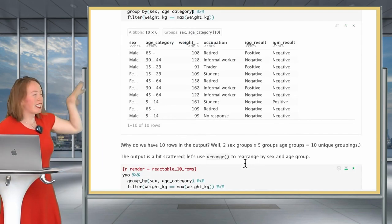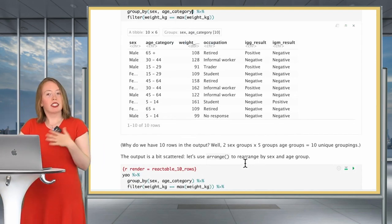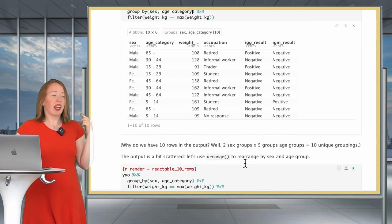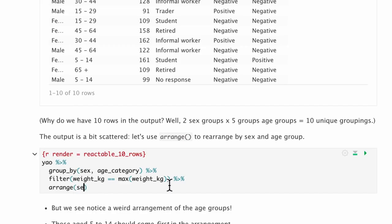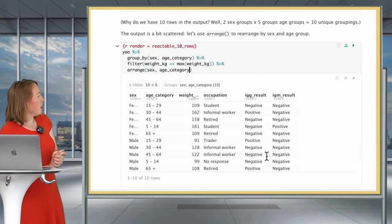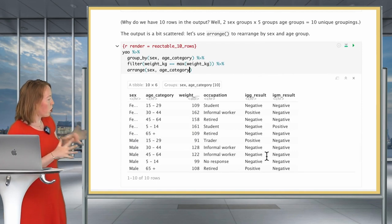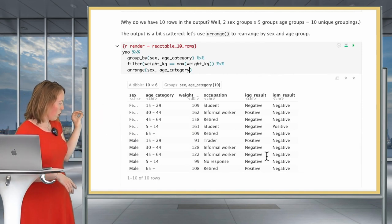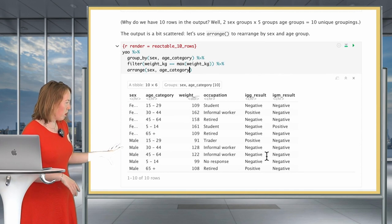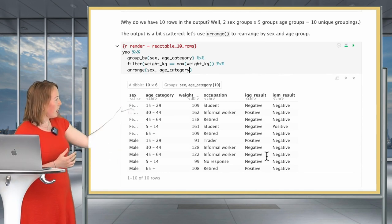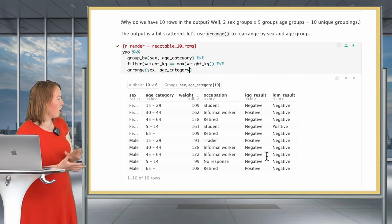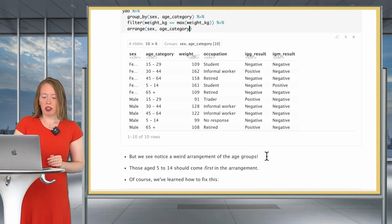You might also notice that this is a bit scattered as an output. So let's see how we would combine group_by, filter and arrange to have something a bit more readable. Let's now arrange by sex and age_category. We now have something that's a bit more ordered, where we have the females here, the five rows, and the males here, the five rows. Yet, we're still seeing that there's a bit of an issue with the age category and the way they are ordered.